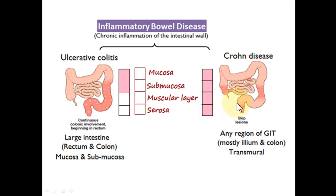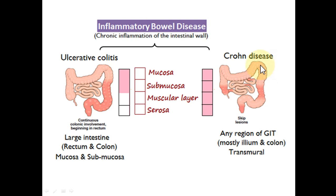On the other hand, Crohn's disease may involve any site from the mouth to the rectum, but the most common site affected is the terminal ileum and ileocecal junction. A characteristic of Crohn's disease is that diseased portions of the intestine are followed by healthy portions, alternating with each other. This appearance is known as skip lesions.